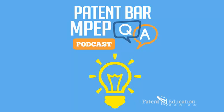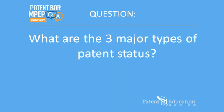Welcome to the Patent Bar MPEP Q&A Podcast. Today's question is: What are the three major types of patent status? The answer to this question can be found in Chapter 100 of the MPEP.